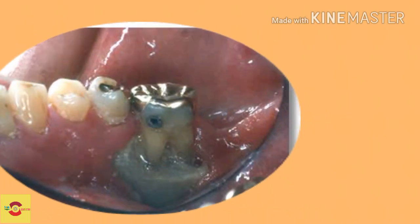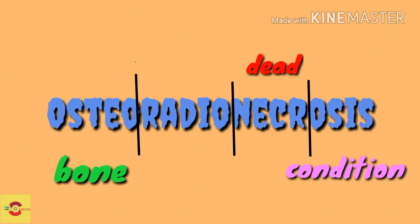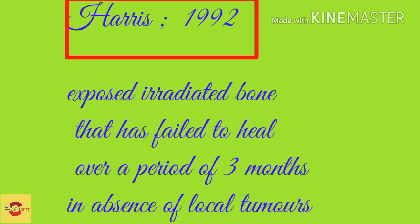Let us look at a special type of osteomyelitis which is osteoradionecrosis. Osteoradionecrosis is a term derived from the Greek word 'osteon' meaning bone, 'necrosis' meaning dead, and 'itis' meaning condition. According to Harris, osteoradionecrosis is exposed irradiated bone that has failed to heal over a period of three months in the absence of local tumors.